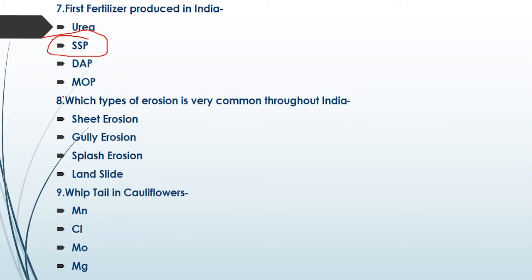The next question is: which type of erosion is very common throughout India? The first option is sheet erosion, second is gully, third is splash, and fourth is landslide. The right answer is the first option — sheet erosion is the most common type of erosion throughout India.